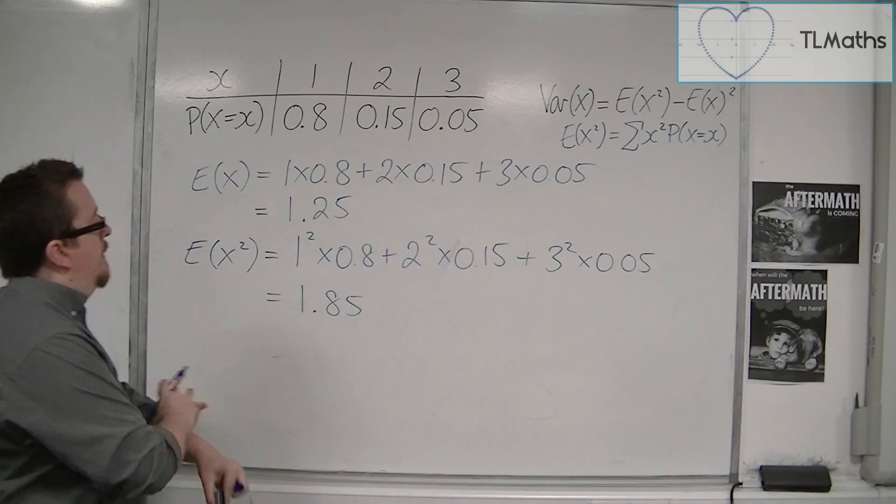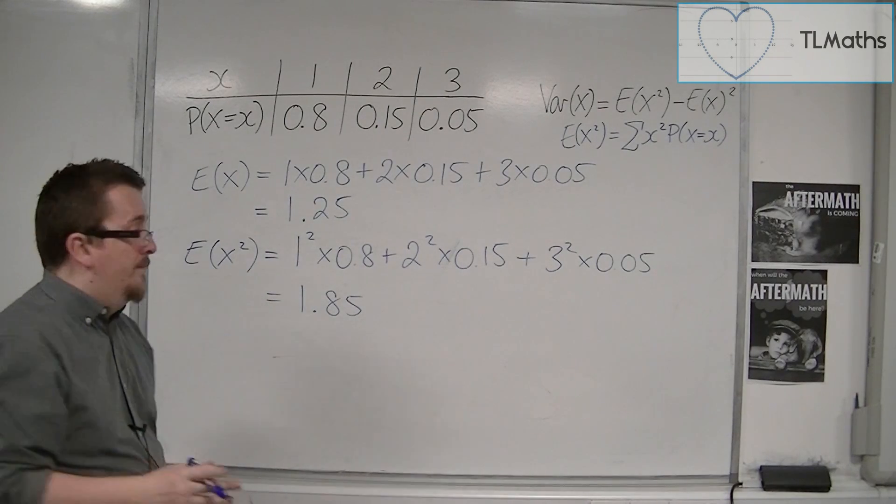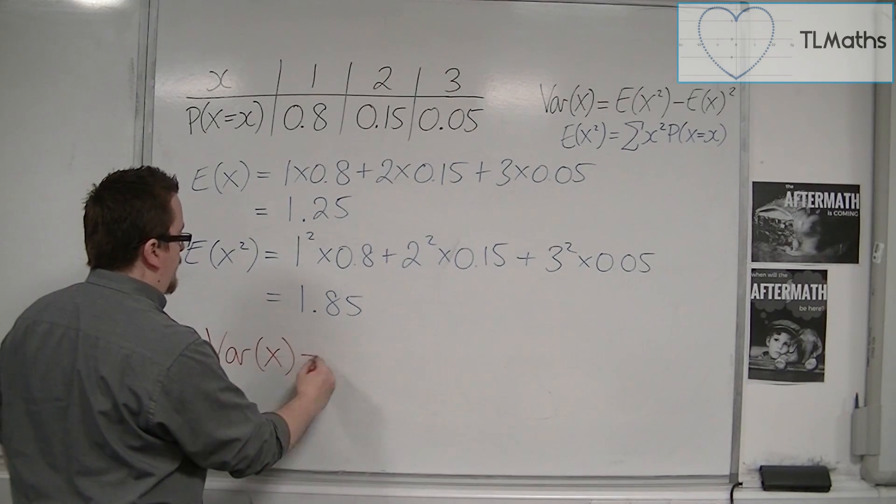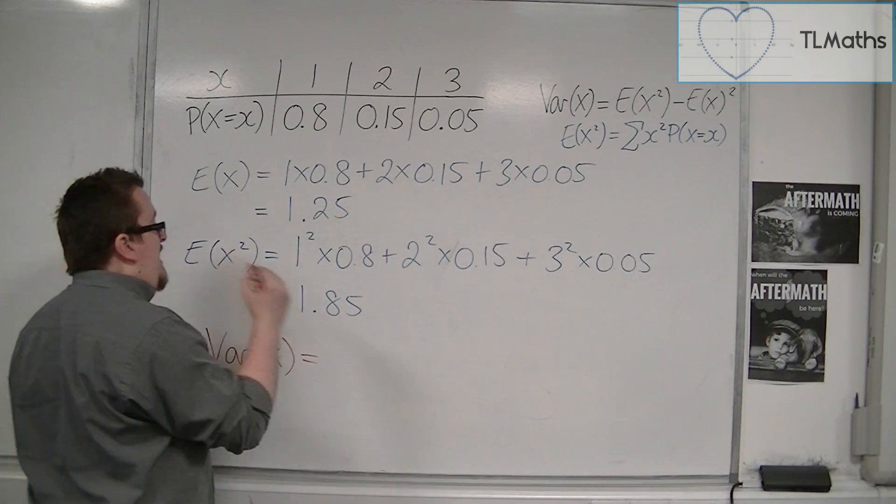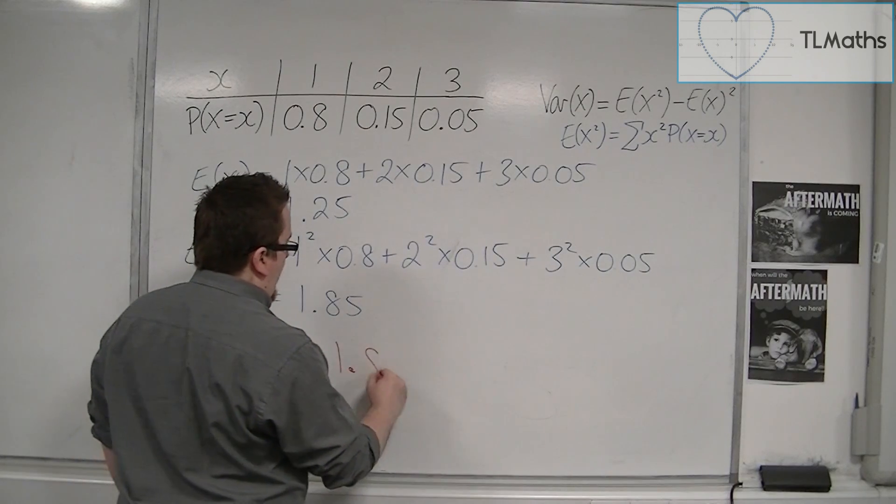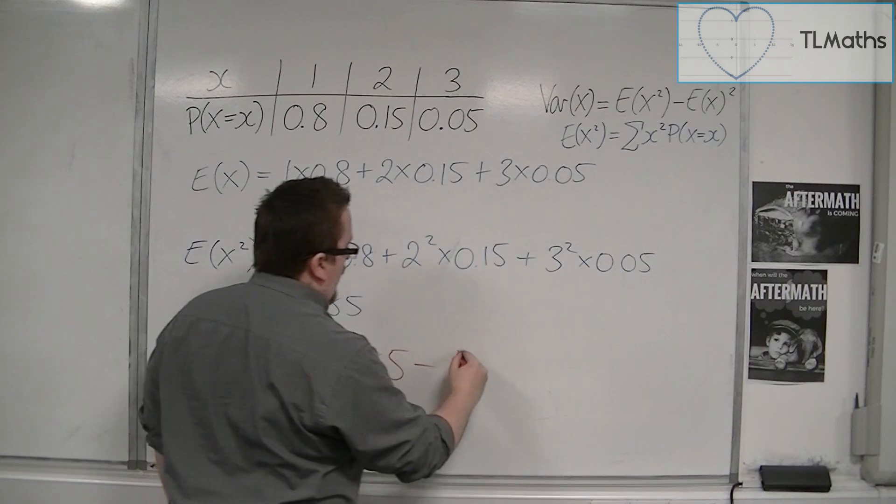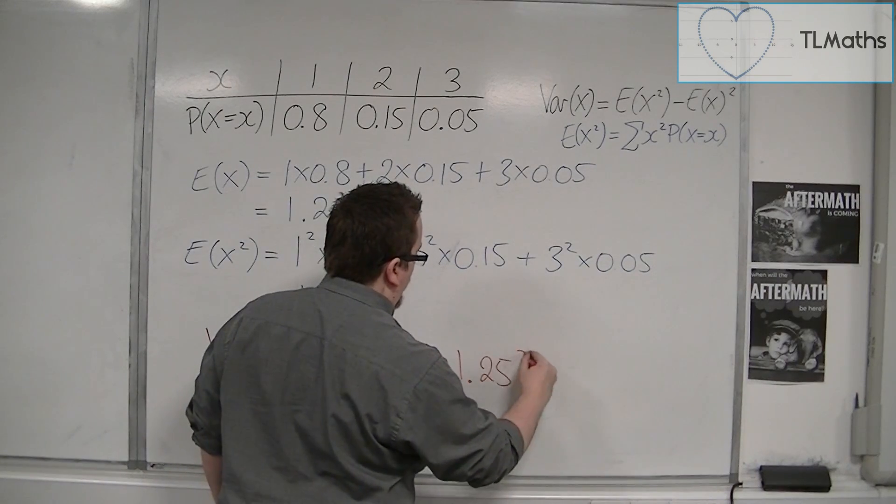Okay, that's E of X squared. The variance of X is E of X squared, so 1.85, take away E of X all squared, so 1.25 squared.